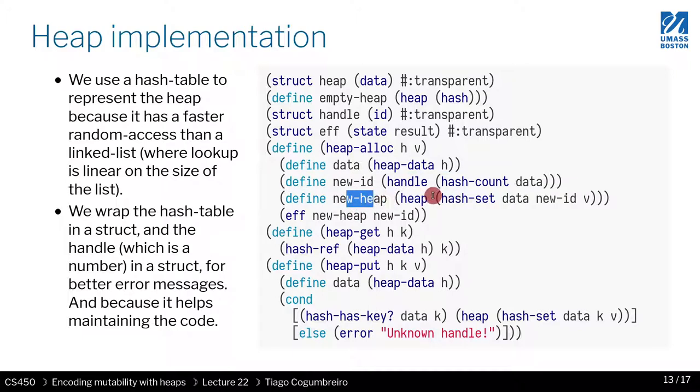We do so by calling hash-set. What hash-set does is it takes the original hash table and assigns the new ID as the key and the value whatever value you provided. Then you wrap it in a heap and you get your new heap. Finally, you should return the state and the identifier, which is the handle.